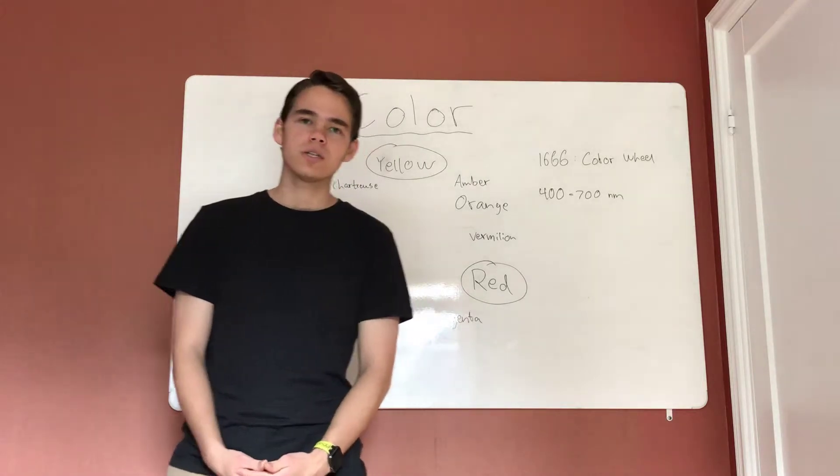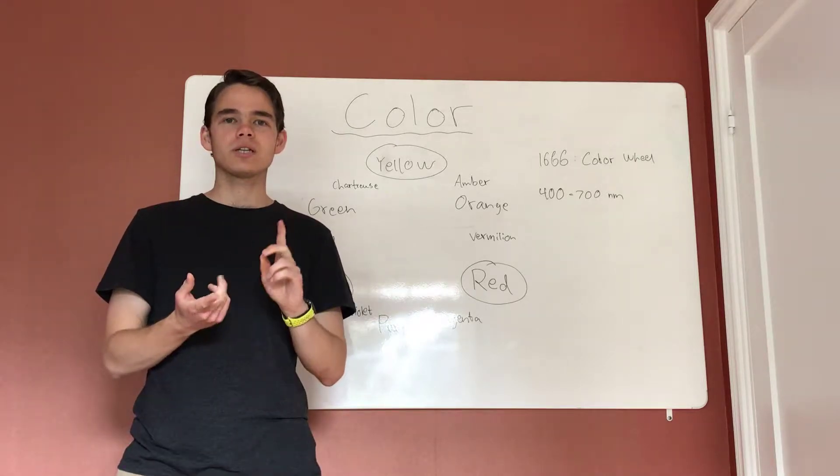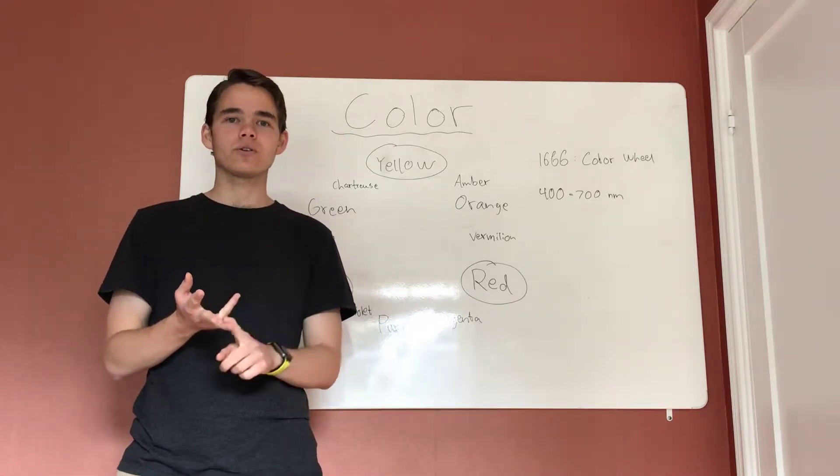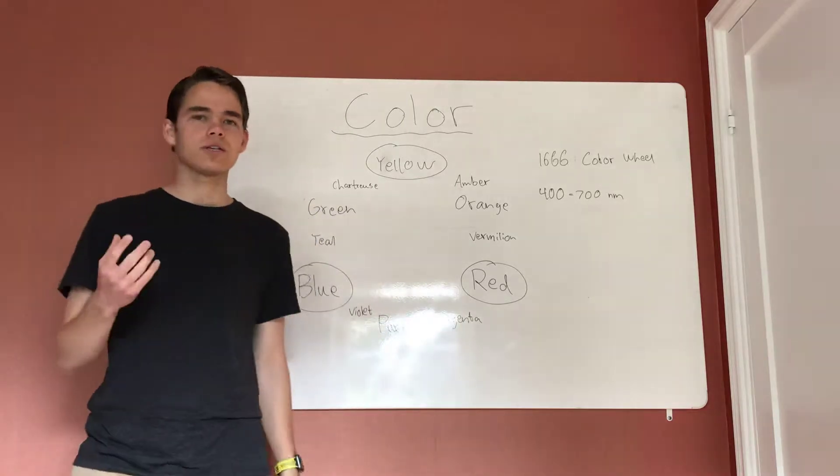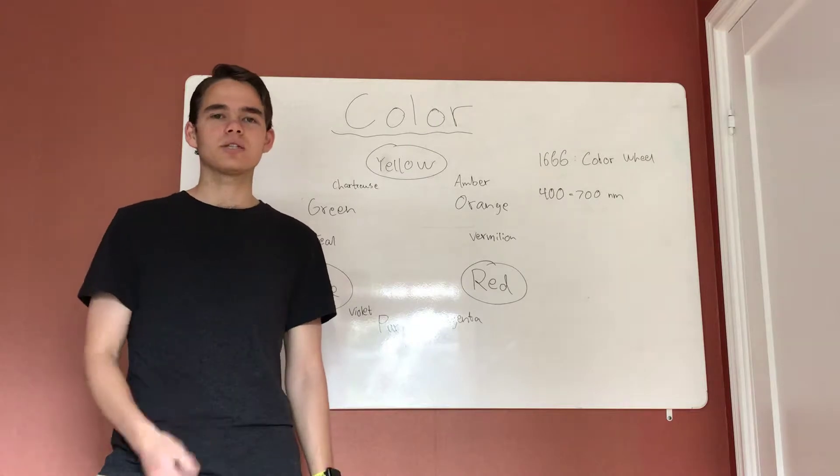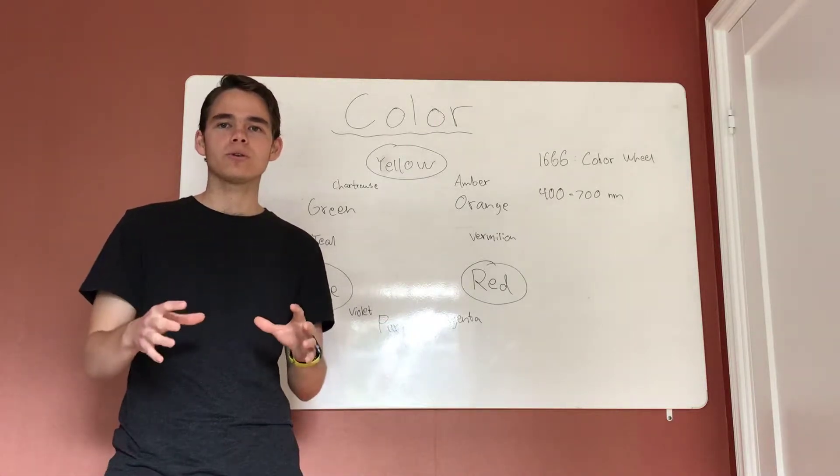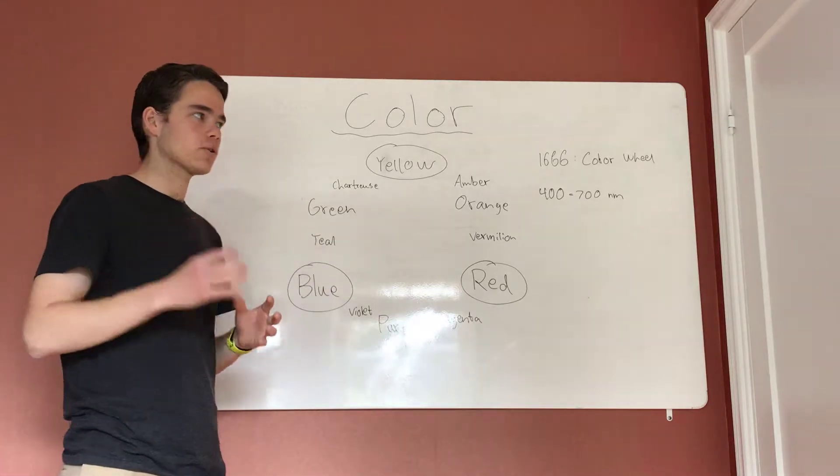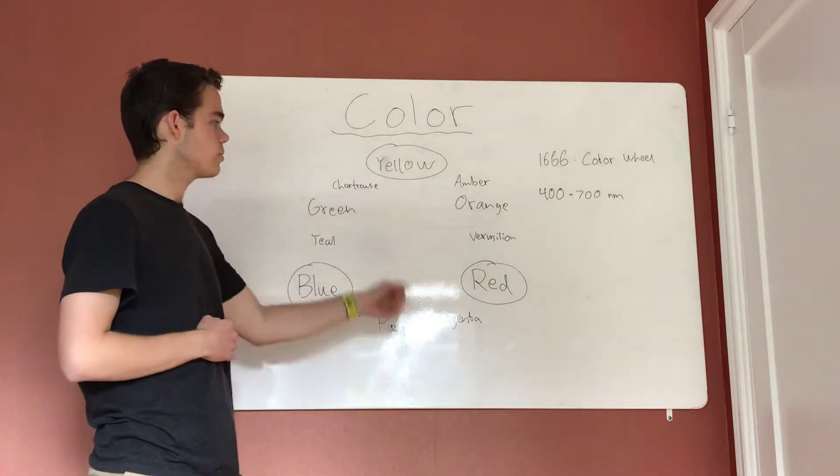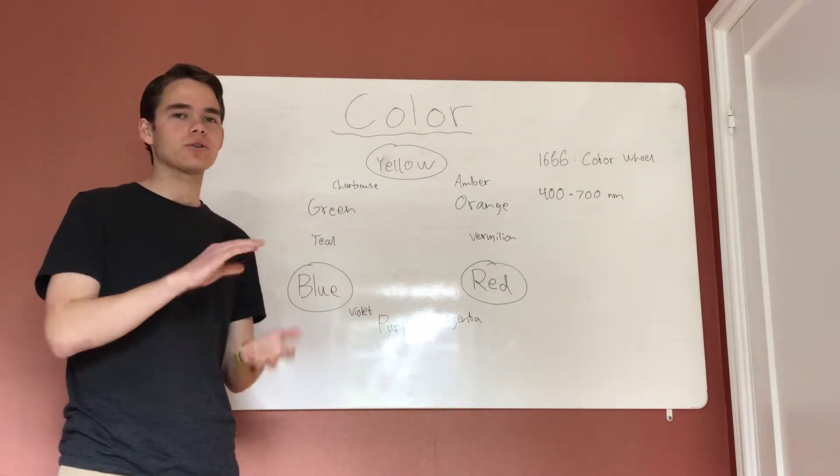So the color wheel consists of three types of colors: primary colors, secondary colors, and tertiary colors. Primary colors are colors that can't be created from mixing any other colors with each other. They are the building blocks of all other colors. So the primary colors are blue, yellow, and red.